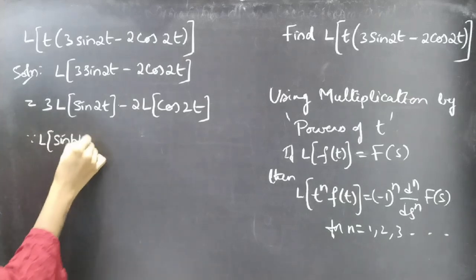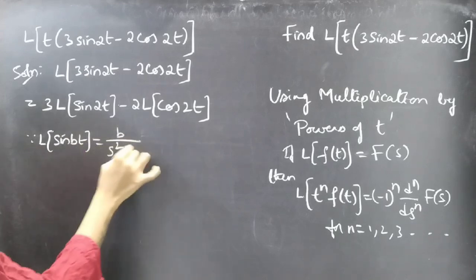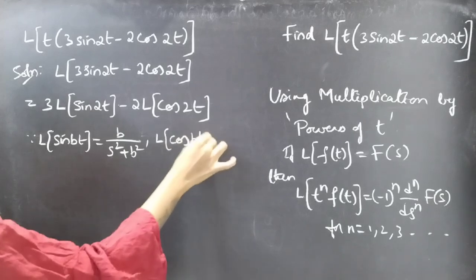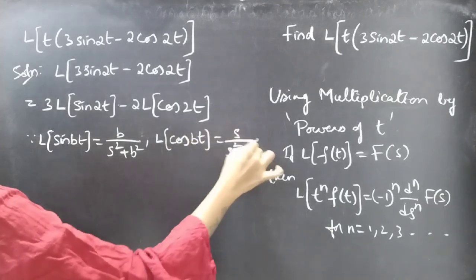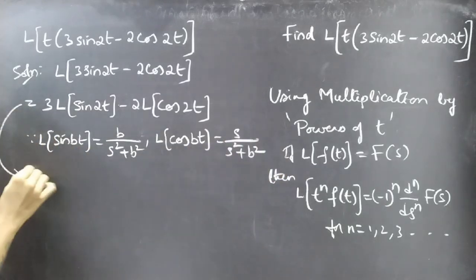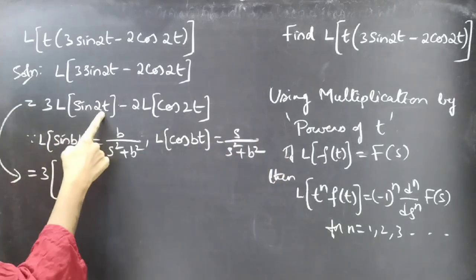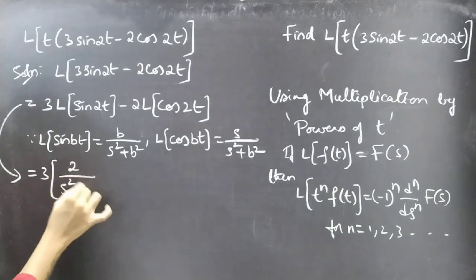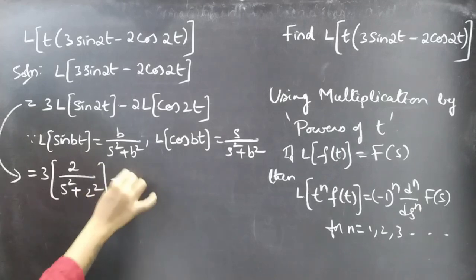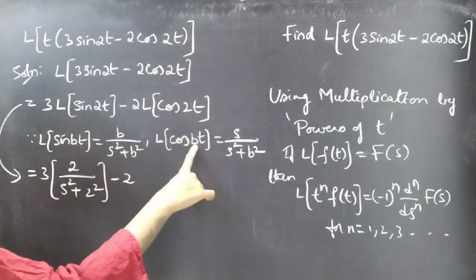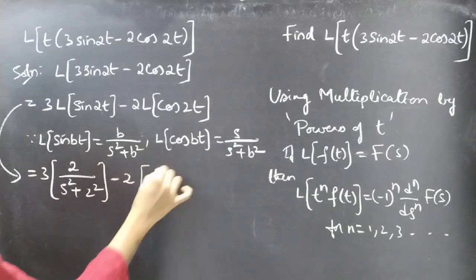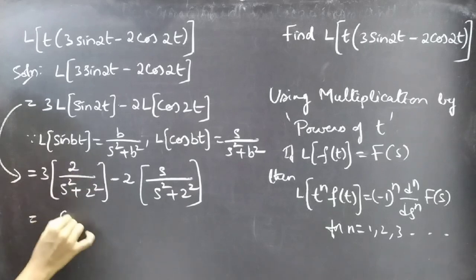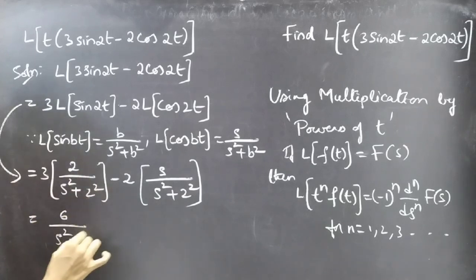We know that L of sin(bt) equals b divided by s² plus b², and L of cos(bt) equals s divided by s² plus b². Comparing 2t with bt, for b equal to 2, we get 3 times 2 divided by s² plus 4, minus 2 times s divided by s² plus 4.